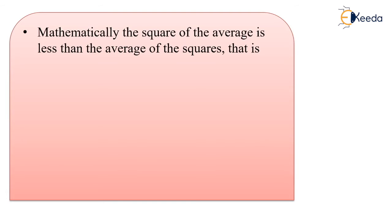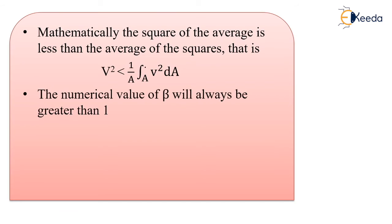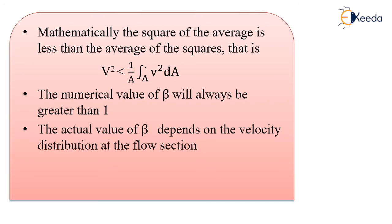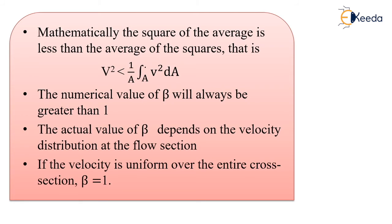Mathematically, the square of the average is less than the average of the squares — that is, V² < (1/A)·∫V²·dA. Therefore, the numerical value of beta will always be greater than 1. The actual value of beta depends on the velocity distribution at the flow section. If the velocity is uniform over the entire cross-section, then beta is equal to 1.